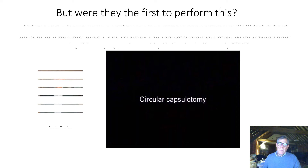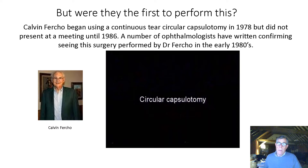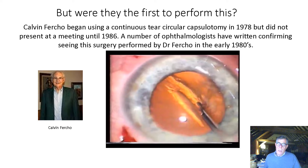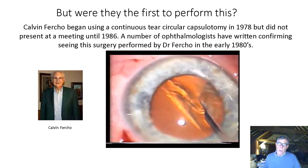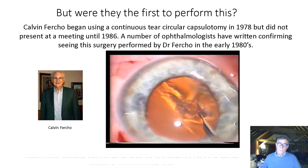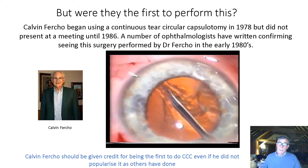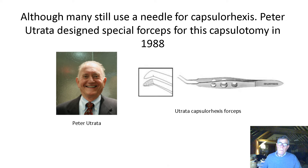But who was first to perform this? Kelvin Firko from North Dakota began using a continuous tear circular capsulotomy in 1978, but he didn't present this at a meeting until 1986. A number of ophthalmologists have written confirming seeing this surgery performed by him in the early 1980s. We can see him doing the surgery using the Stortz irrigating cystotome, using a technique quite similar to Howard Gimbel's. It may be that he should be given credit for being the first to do this, even if he didn't popularize the technique.